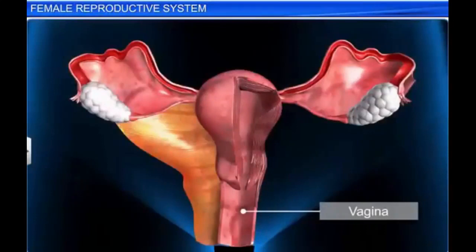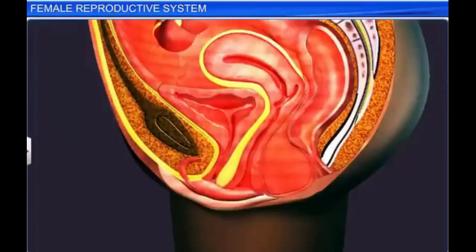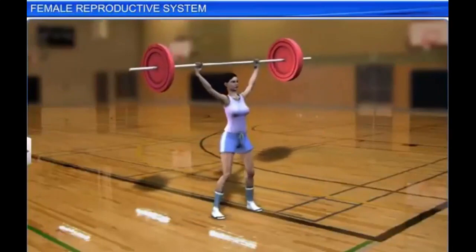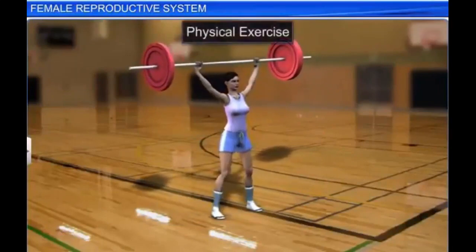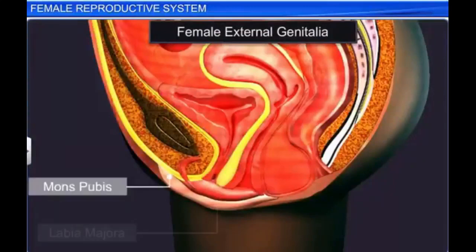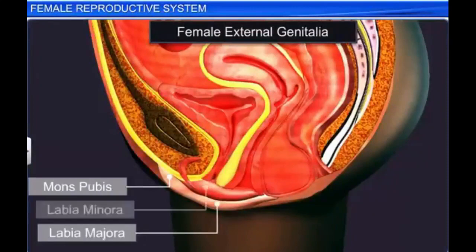The vagina is a muscular tube starting from the lower end of the uterus up to the outside. The opening of the vagina in young females is partially covered by a thin membrane called the hymen. The hymen is frequently ruptured in childhood due to strenuous physical exercise. The female external genitalia includes the mons pubis, labia majora, labia minora, and the clitoris.